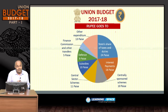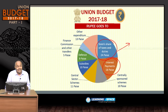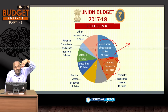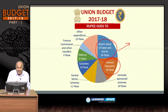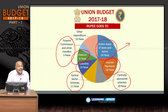Looking at how the rupee goes: states' share of taxes and duties takes 24 paise; interest payments take 18 paise, since the government borrows every year and the accumulation of fiscal deficit is public debt on which interest must be paid. Centrally sponsored schemes take 10 paise, central sector schemes 11 paise, subsidies 10 paise, defence 9 paise, other Finance Commission transfers (like local bodies) 5 paise, and other expenditure 13 paise.